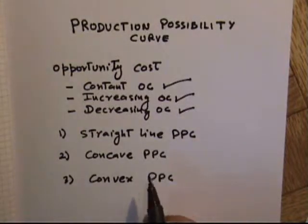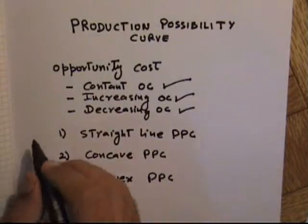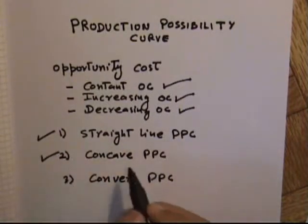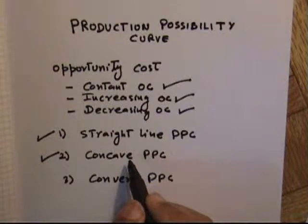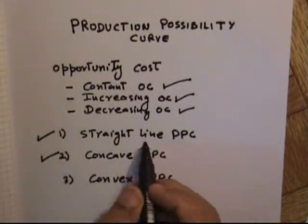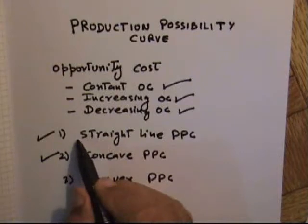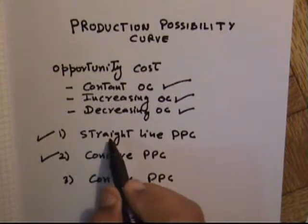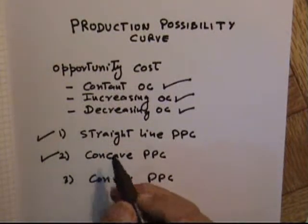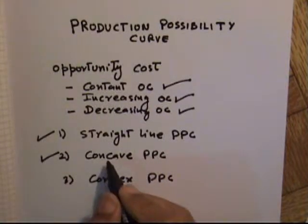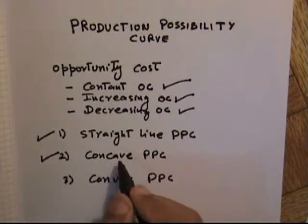In this lesson, I am going to focus on the Straight Line and Concave Production Possibility Curves. The Straight Line curve helps us understand the theoretical concept of this model, while the Concave Production Possibility Curve is closer to real-life situations.